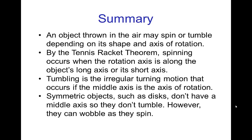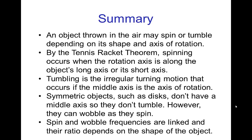Symmetric objects like discs or footballs don't have a middle axis, so they don't tumble, however they can wobble as they spin. And the spin and wobble frequencies are linked and the ratio depends on the shape of the object. We saw for the plate they were in a ratio of two to one. So it's complicated, but hopefully that clarifies some of what's going on when an object is turning as it flies through the air.